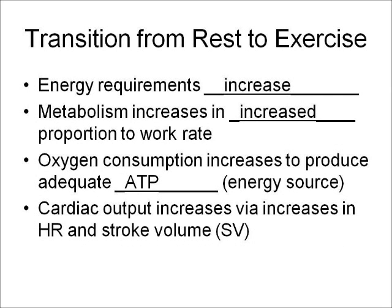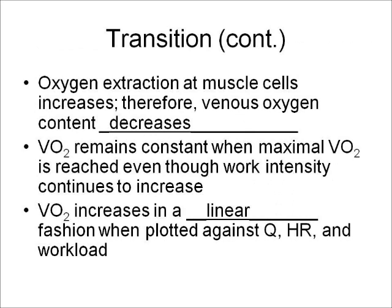Next slide: transition from rest to exercise. Energy requirements increase. Metabolism increases in proportion to work rate. Oxygen consumption increases to produce adequate ATP, which is our energy source. Cardiac output increases via increases in heart rate and stroke volume. Oxygen extraction at muscle cells increases, therefore venous oxygen content decreases.